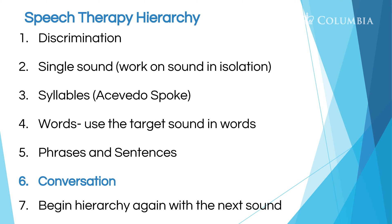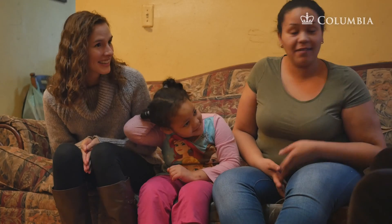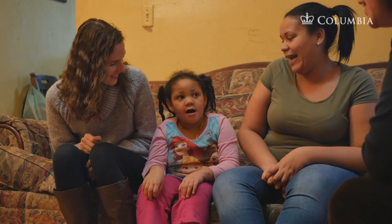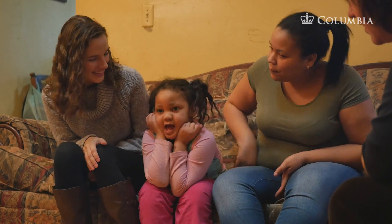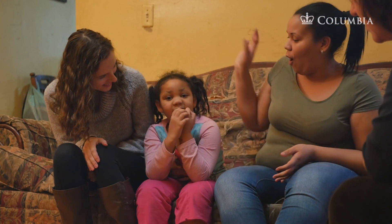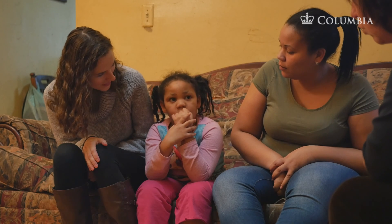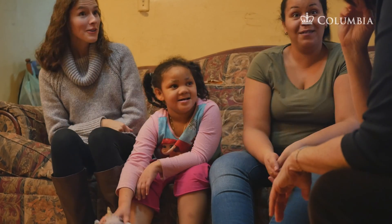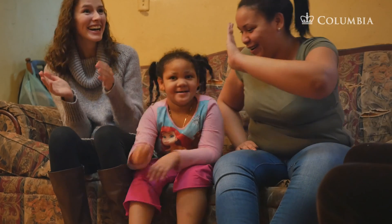Once the child has mastered the target sound at the phrase and sentence level, move on to conversation. You want to make sure that the child is able to pull all those skills during conversation and connected speech. Here's an example of targeting the sound at the conversational level. I open the door with a key. Nope. Now you do — key. A key. Key. I open the door with a key. That was great. That's my girl.